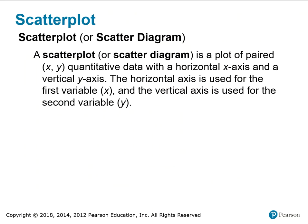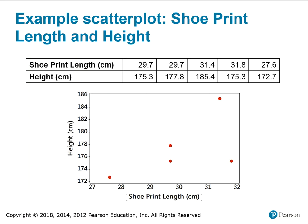The last graph is a scatter plot. Scatter plots, or scatter diagrams, are graphs of ordered pairs (x, y) of quantitative data with a horizontal x-axis and a vertical y-axis. The horizontal axis is used for the first variable x and the vertical for the second. This is an example of a scatter plot showing shoe print length and height — shoe print length in centimeters is on the horizontal axis and height is on the vertical axis, with each pair plotted as a point in the coordinate plane.